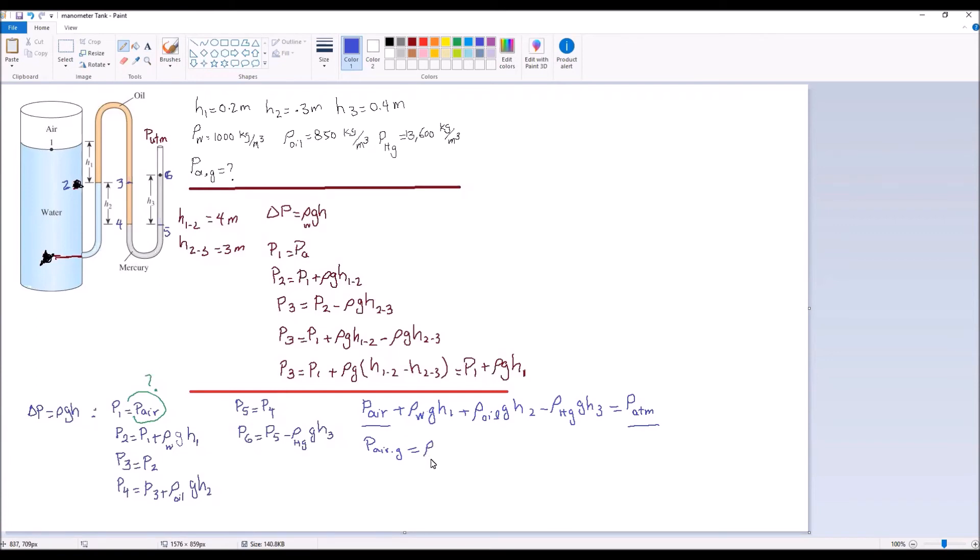Then I'll take all these terms to the other side. We're going to have rho mercury GH3 minus rho water GH1 minus rho oil GH2.